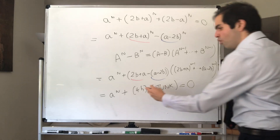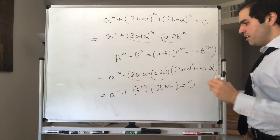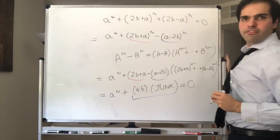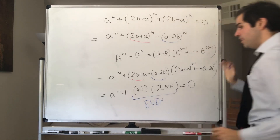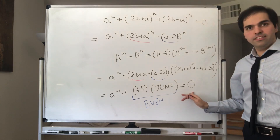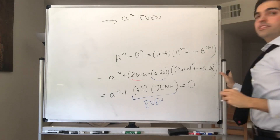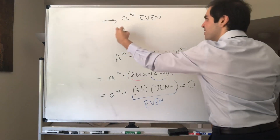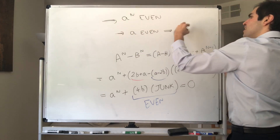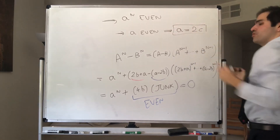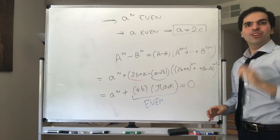Here's the key point: 4b is even — very even in fact. So we get 4b times whatever integer we have is even. Therefore a to the n plus an even number is zero, so a to the n must be even. Hence a to the n is even, and therefore a is even. So we can write a equals 2c for some integer c.